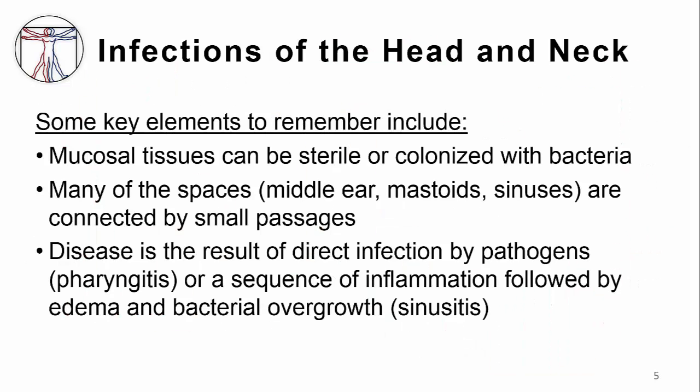Infections of the head and neck have some key elements. Mucosal tissues can either be sterile or, very importantly, colonized with bacteria. Many of the spaces of the upper airway, such as the middle ear, mastoids, and sinuses, are connected by small passages that can be closed off by inflammation. Disease in the same space is often the result of either direct infection by a pathogen, as you see in pharyngitis, or a sequence of inflammation followed by edema, or swelling, or fluid accumulation, leading to bacterial overgrowth and sinusitis.